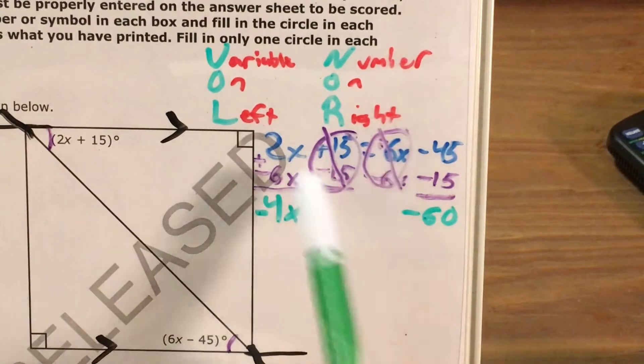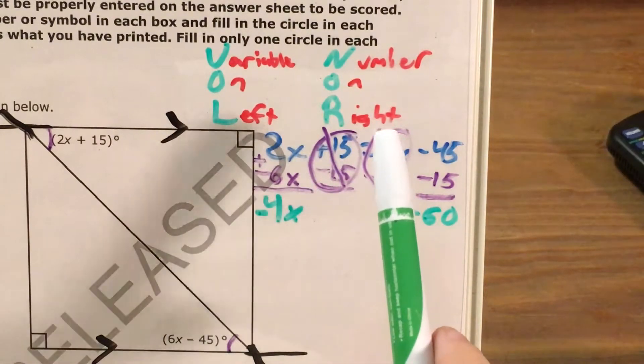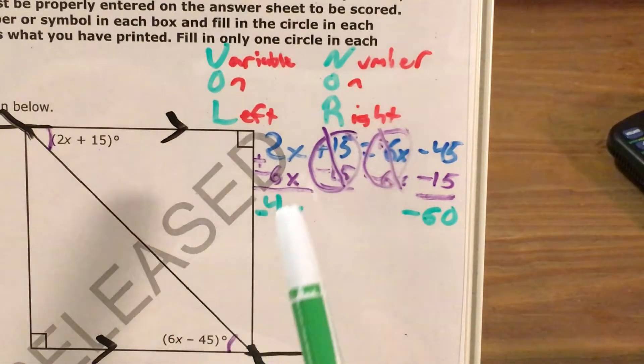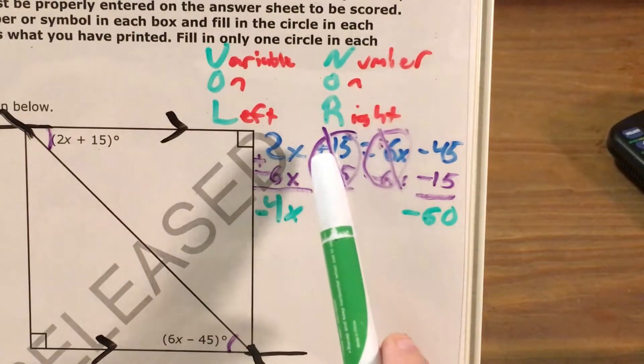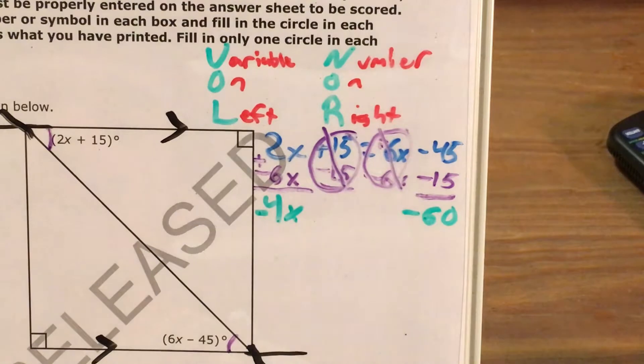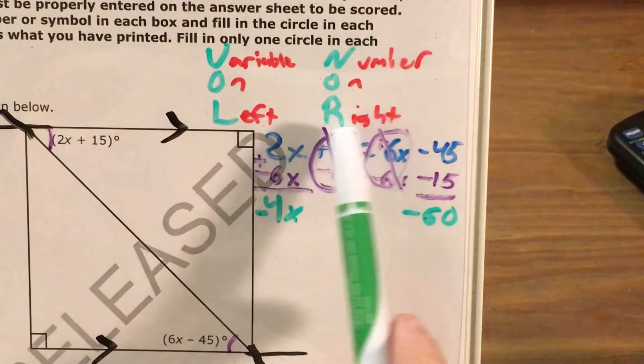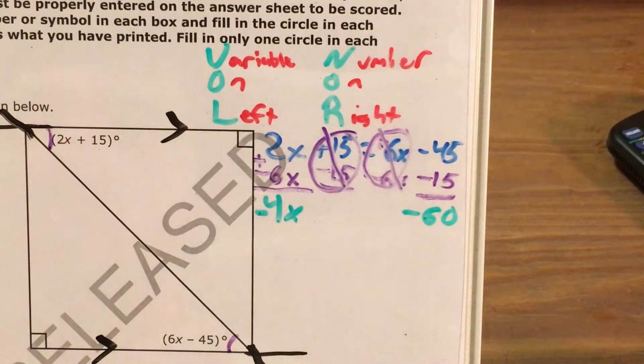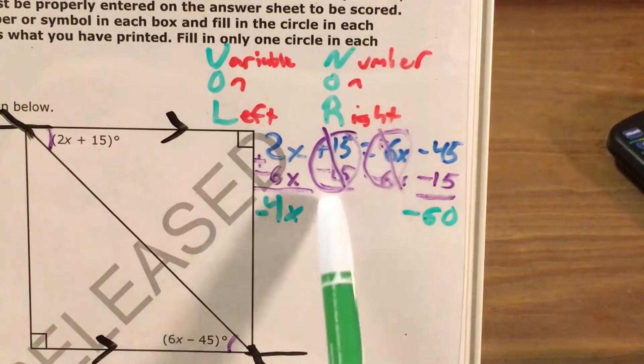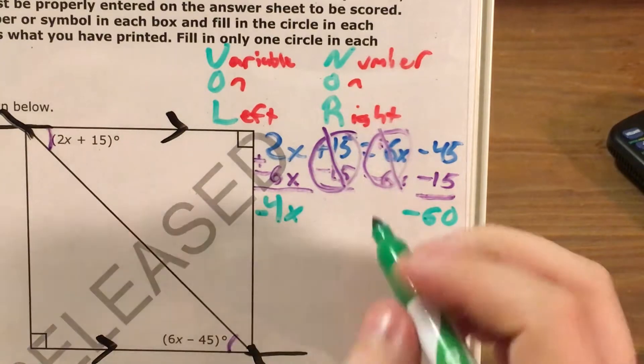Now at this point, I just want to go over what all we've done. We took all our variables and got them on the left side. We took all our numbers and got them on the right side. We canceled out a number from the left and a variable from the right. So we started with two terms on each side and ended up with one term on each side. As Thanos would say, this is perfectly balanced as all things should be. A very applicable statement to math.